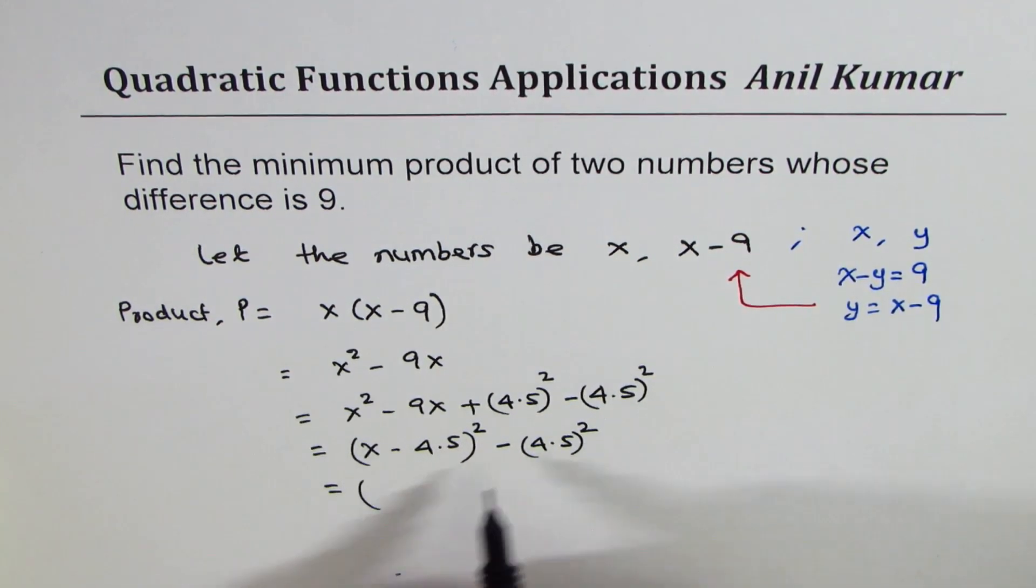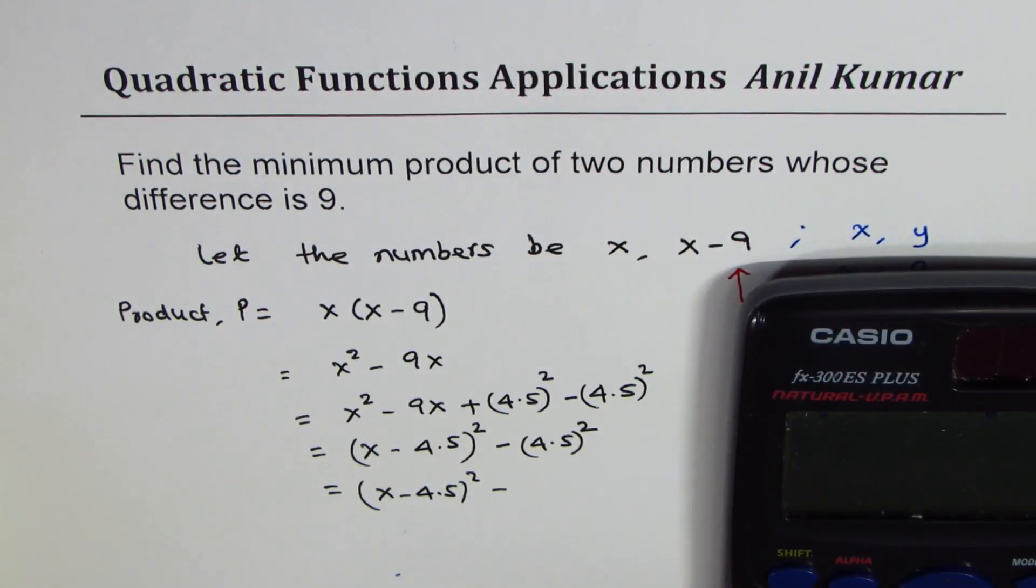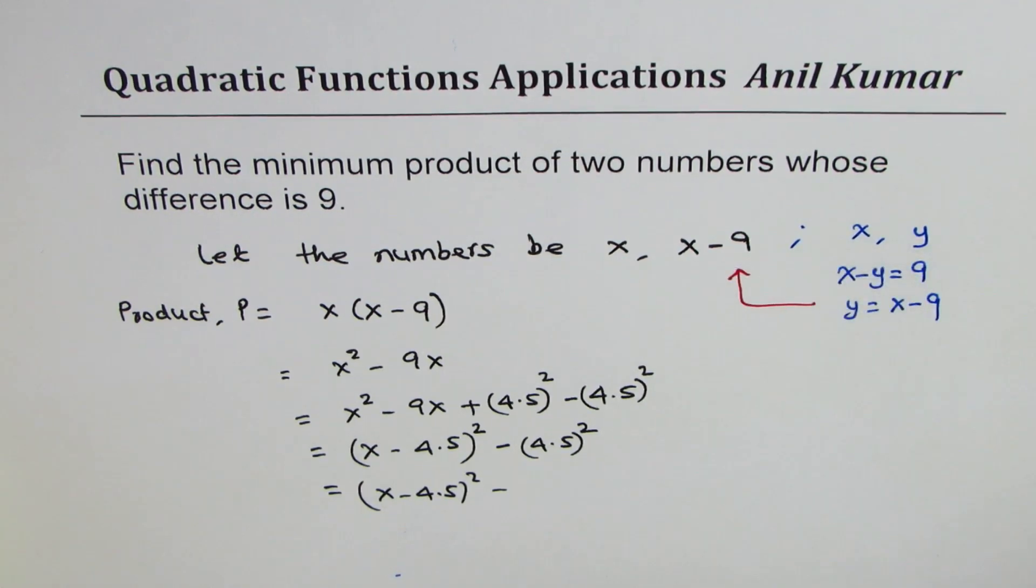So this is in the vertex form. Let me just hold a calculator and get the value. X minus 4.5 whole square minus 4.5 square is equal to, let's write in decimals, it is 20.25.